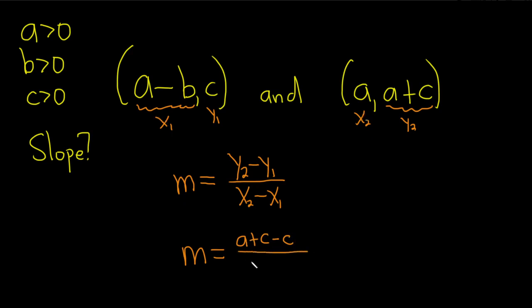Then it's x2 minus x1. So x2 is a minus x1. We have to be careful here. You see we're subtracting, and this is two things. This is really in parentheses. So it's a minus b in parentheses. Be really careful, okay? So it's a minus a minus b.